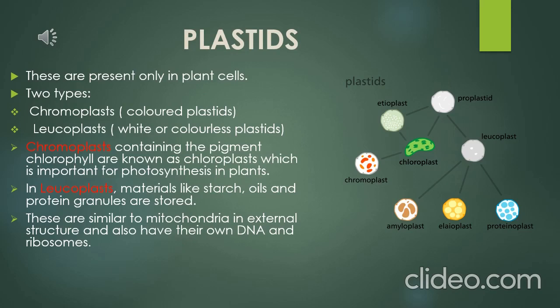Plastids are similar to mitochondria in external structure and also have their own DNA and ribosomes — meaning they are also double membrane structures. So there are two cell organelles — mitochondria and plastids — that have their own DNA and ribosomes, making them capable of producing their own proteins.